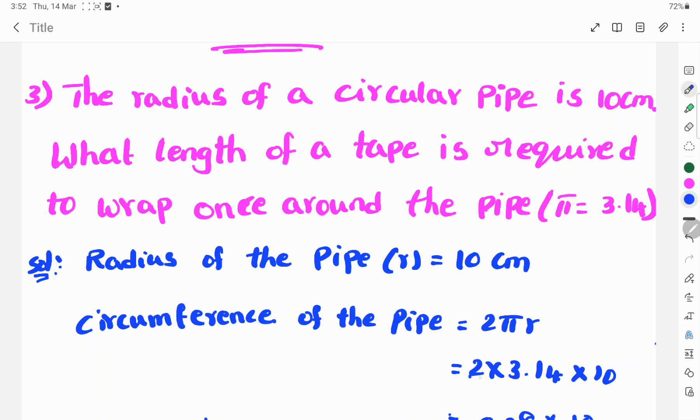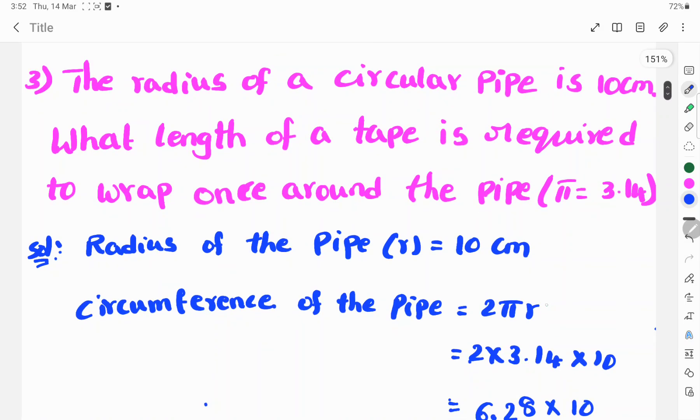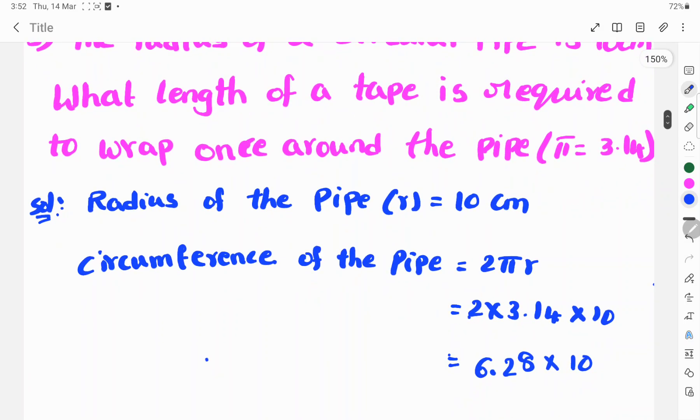Here 2 into pi value, you already taken 3.14, so 3.14 into r radius is 10. So 2 into 3.14: 2×4 is 8, 2×1 is 2, 2×3 is 6. That means 6.28 into 10 centimeters.